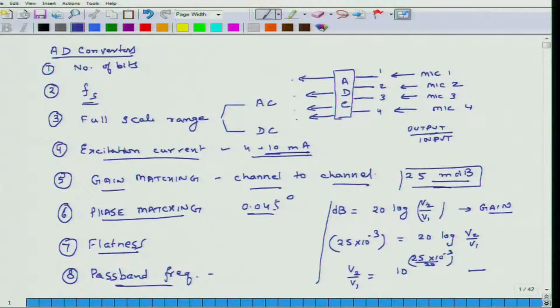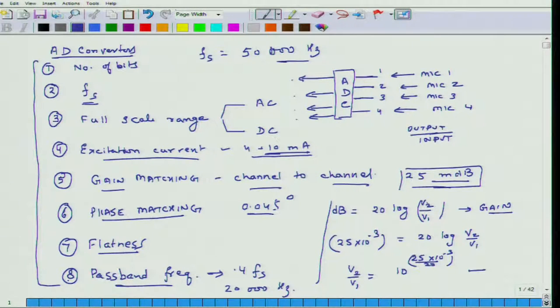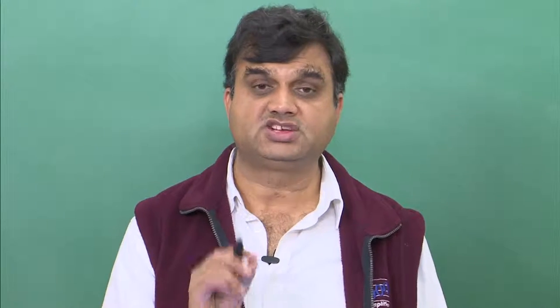Another parameter is passband frequency. This means that you should be able to sense signals which are below this frequency. For this device it is specified as 0.4 times fs, and the sampling frequency fs was something like 50,000 hertz, so the passband frequency was 20,000 hertz. These are some of the important parameters. Once you do this a couple of times you will become comfortable, but at least in the beginning it is important that you look at every single parameter and understand what it means.